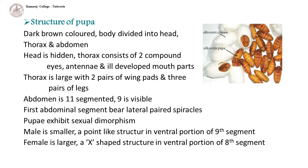Structure of pupa: dark brown colored body divided into head, thorax and abdomen. The head is hidden at the ventral side of the thorax and consists of 2 compound eyes, antennae and undeveloped mouth parts. Thorax is large with 2 pairs of wing pads and 3 pairs of legs. Abdomen is 11-segmented, though only 9 segments are externally visible. First abdominal segments bear lateral spiracles. Pupae exhibit sexual dimorphism: male pupa is smaller and shows a point-like structure in the ventral portion of the 9th segment, while female pupa is larger and shows an X-shaped structure in the ventral portion of the 8th segment.